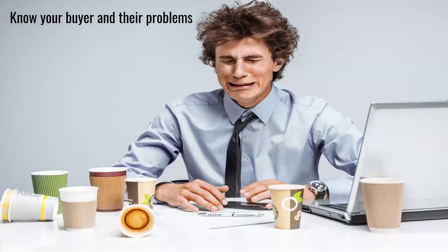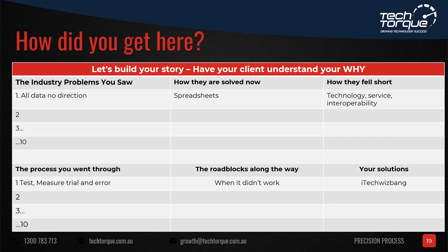Here's a structure for how to create content: how did you get here? Tell your story — industry problems you saw, how they're solved, how they fell short, the process you went through, the roadblocks along the way, and your solution. The next slide is incredibly dense — take a screenshot. It's about the user journey.